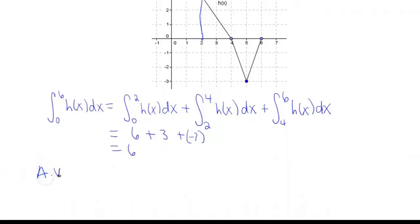Okay, but now we want the average value. So the average value of this function on the interval is 1 over 6 minus 0 times the integral from 0 to 6 of our function h(x) dx. So that gives us 1 over 6 times 6, which gives us a grand total of 1.